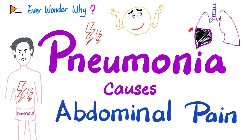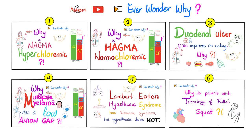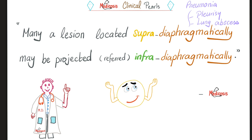Now you know why pneumonia, or pleural effusion, or lung abscess, or pleural fistulas can cause pain in the anterior abdominal wall — it all makes sense now. If you want to be a great student, go review the basic anatomy of the thorax just after watching this video. And as Medicosis says: many a lesion located supra-diaphragmatically can be projected infra-diaphragmatically.